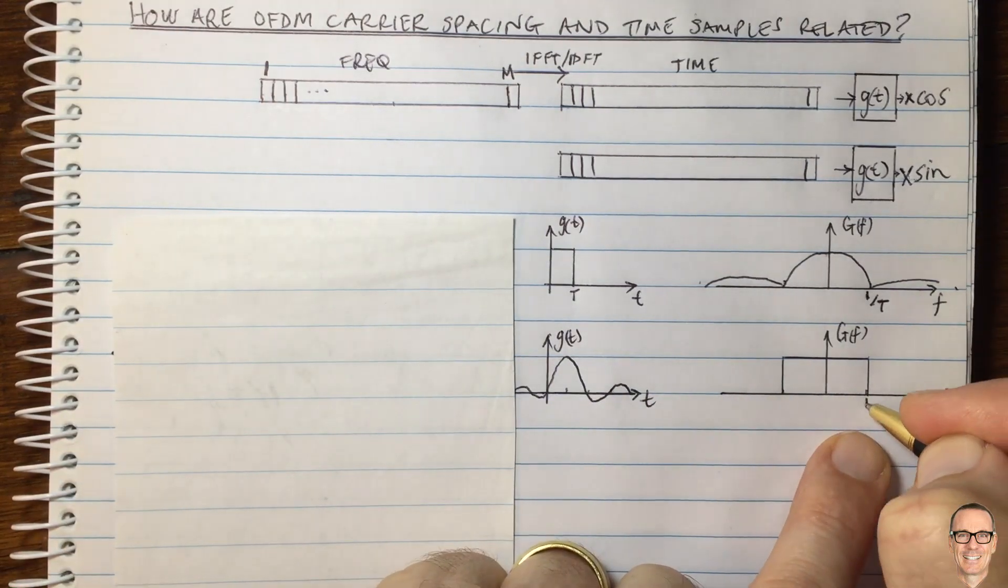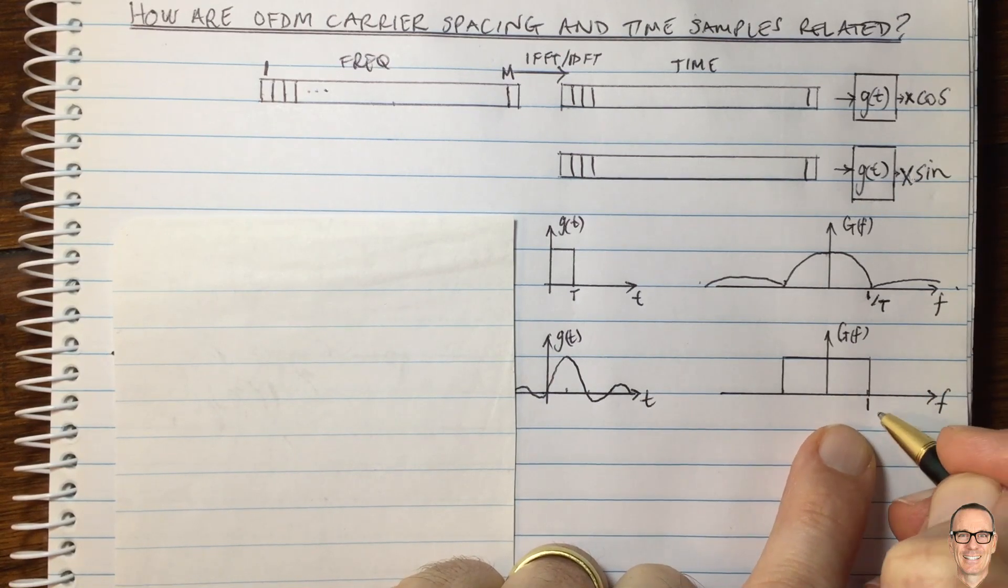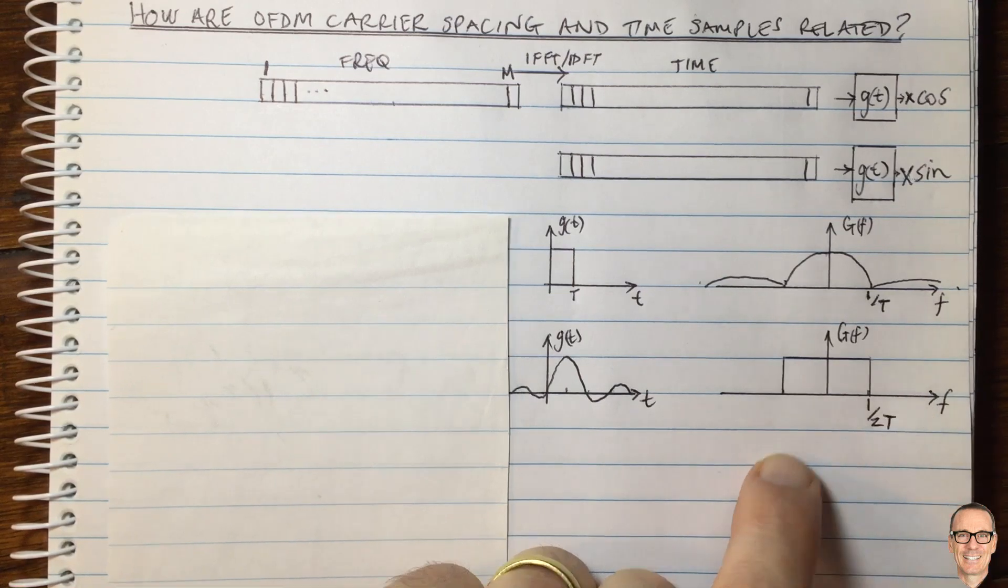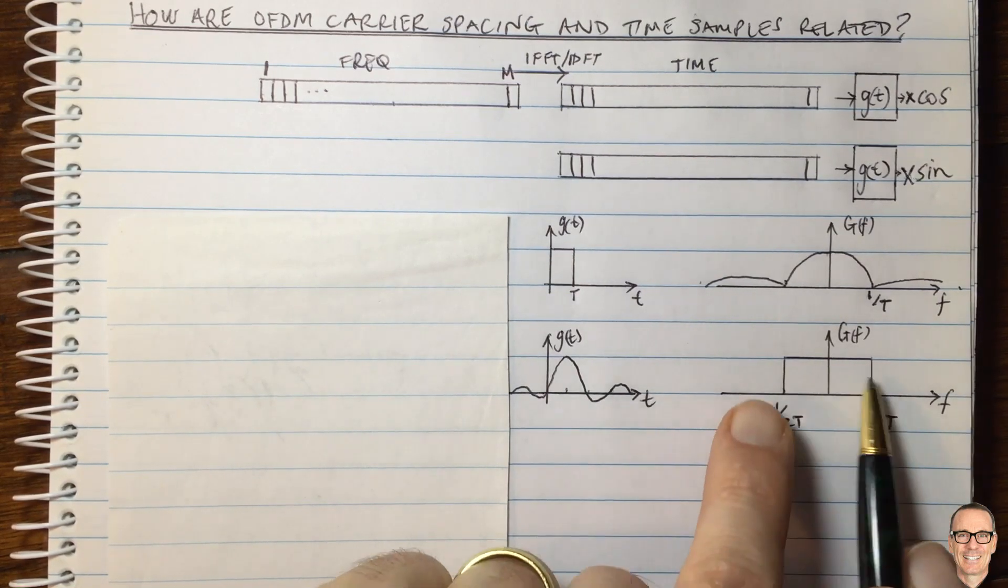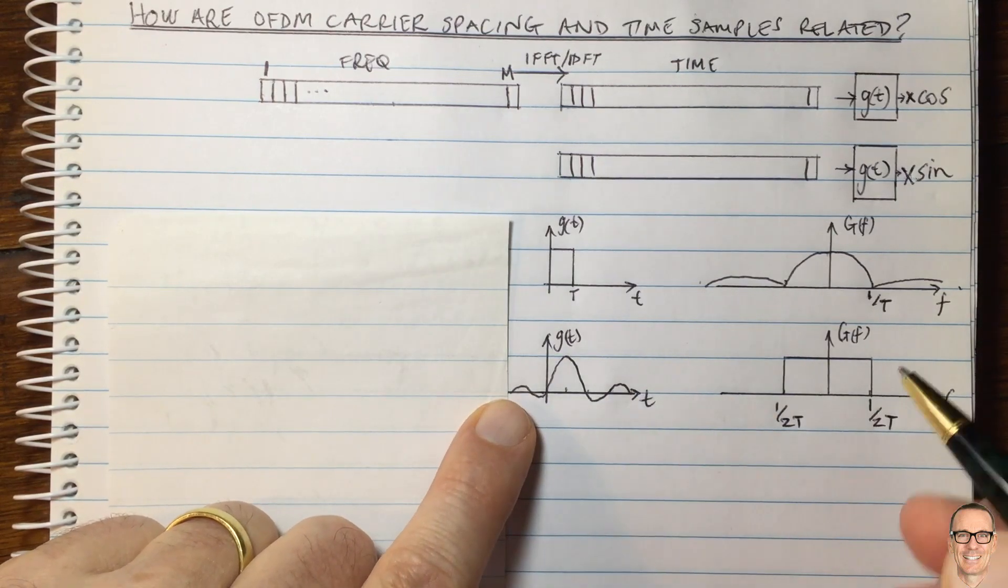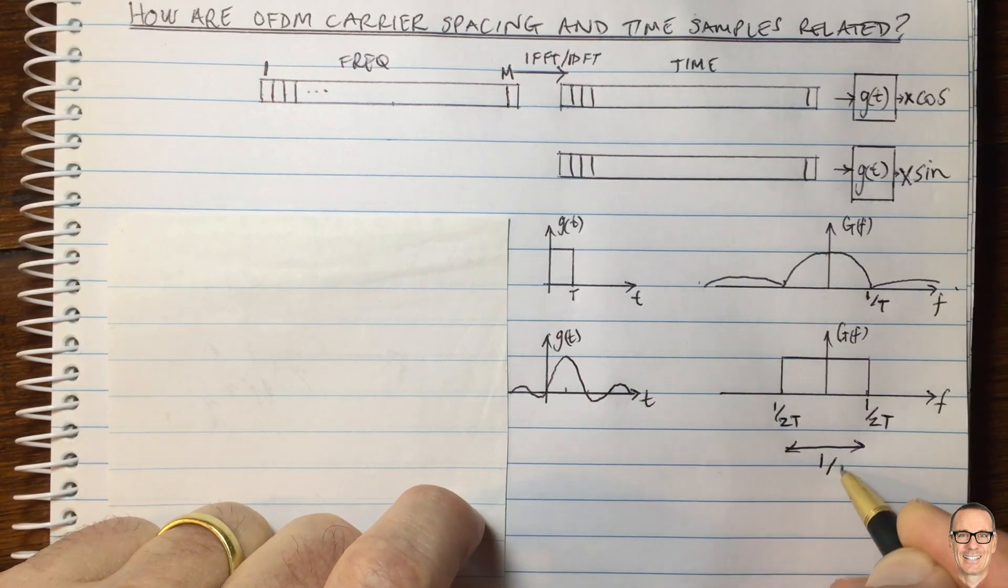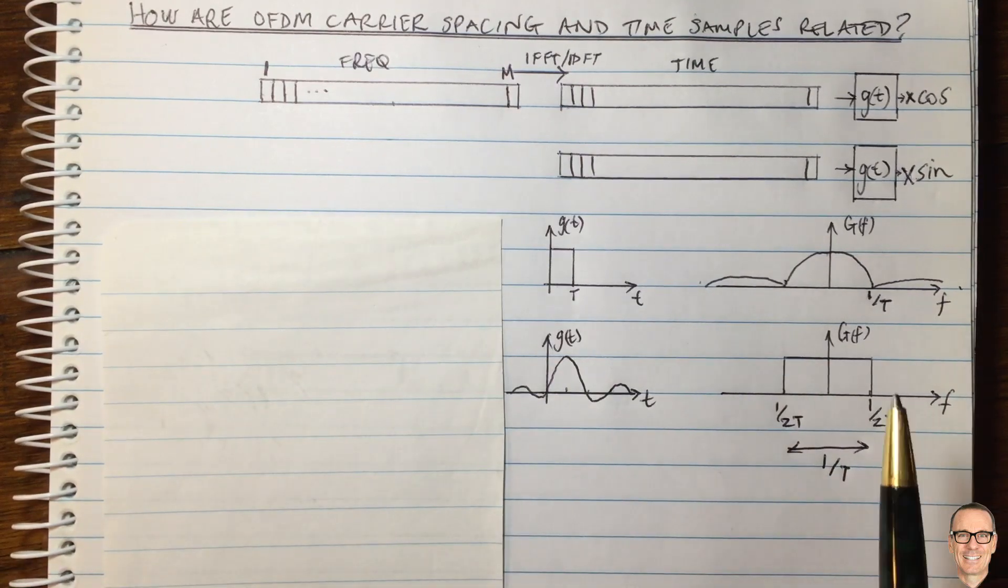It's a SYNC function. This has a Fourier transform that's a square. It comes down here at one. In this case, it's one. I haven't drawn them to scale here. This is one divided by two T, one divided by two T. This is a narrower bandwidth if you use a SYNC pulse shaping filter. The width across this band is one divided by capital T.